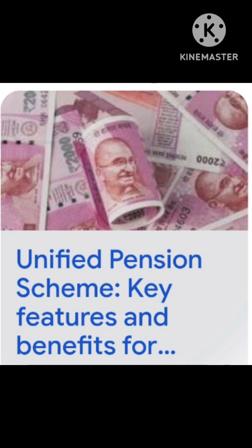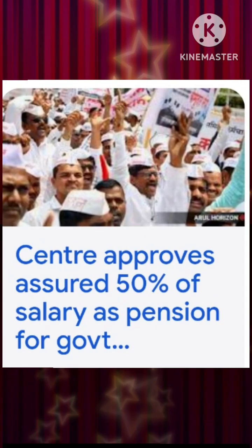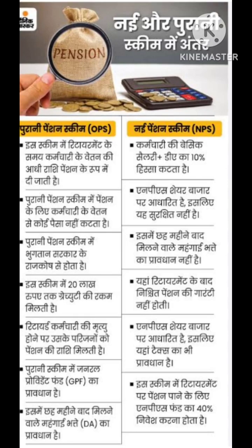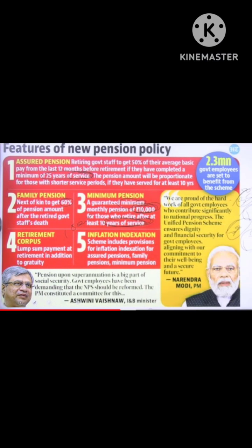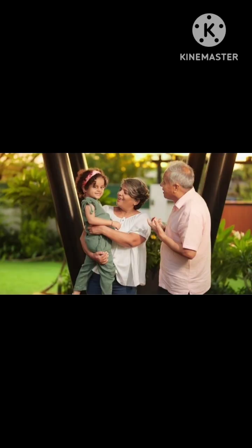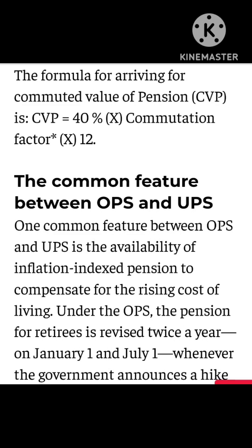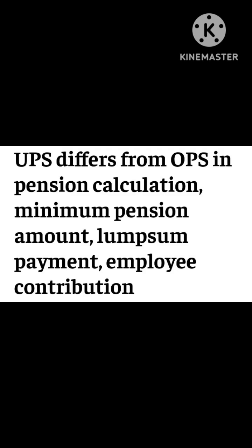Point 5: Lump Sum Payment without Reduction of Pension. The Unified Pension Scheme offers a lump sum payment at the time of superannuation. The lump sum payment will be calculated as 1/10th of monthly emoluments plus DA on the date of superannuation for every 6 months of service completed. This payment will not reduce the quantum of assured pension as per the government's press release. This appears to be better than OPS, because under OPS a lump sum could be taken at retirement only via commutation of pension, which reduced the pension amount.